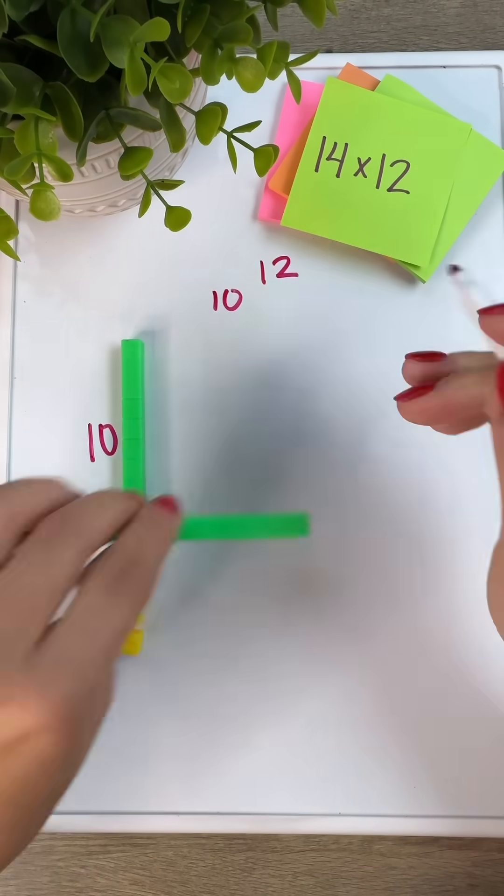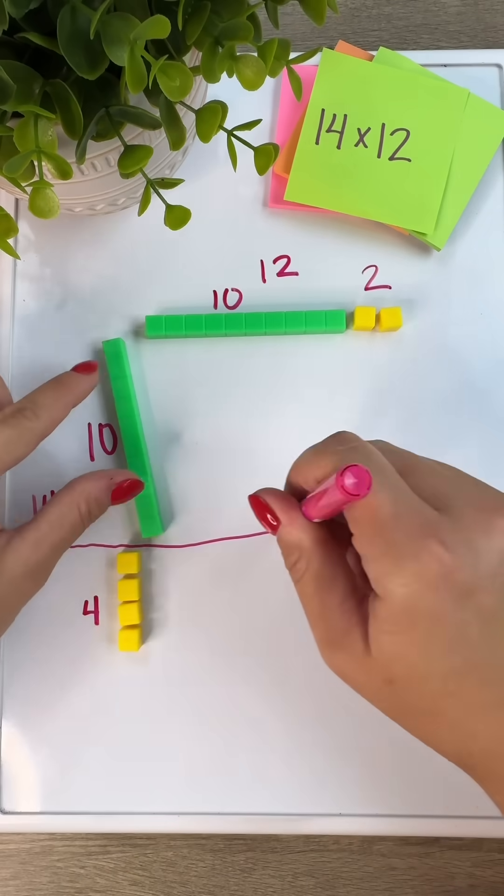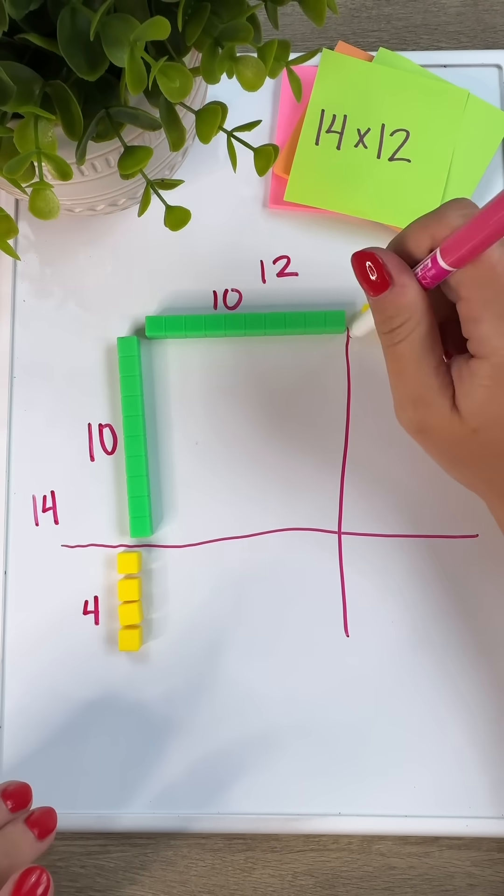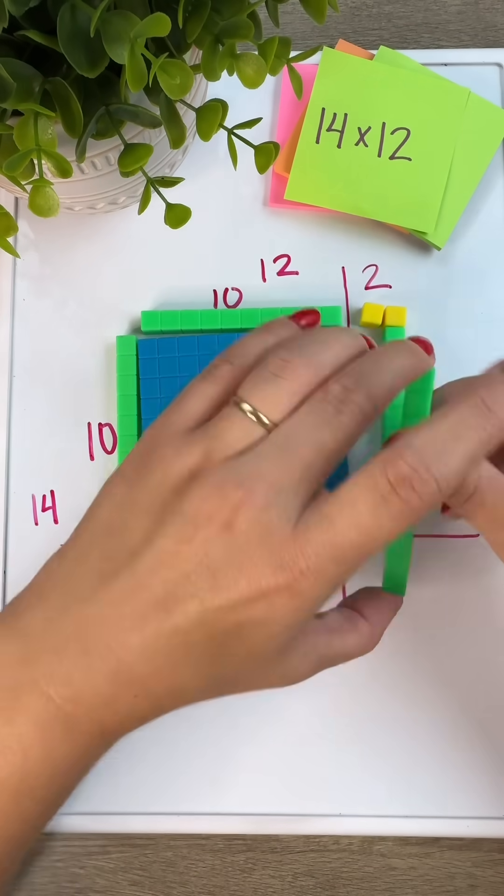We want to connect this multiplication representation to the area model. When doing this, we're finding that space inside, also known as the area of this rectangle. Using base 10 blocks will hold that place value when we're multiplying our factors.